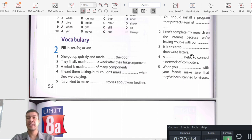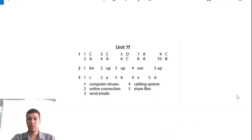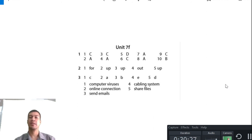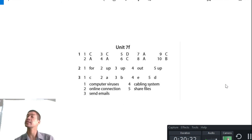Complete the sentences using the phrases above: 'You should install a program that protects against computer viruses.' 'I can't complete my research because we're having trouble with our online connection.' 'It's easier to send emails than write letters.' 'A cabling system helps to connect a network of computers.' 'When you share files with friends, make sure they've been scanned for viruses.' Make sure your answers match and make the necessary corrections. Thank you for listening — goodbye!